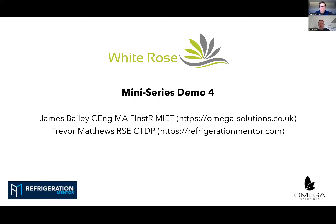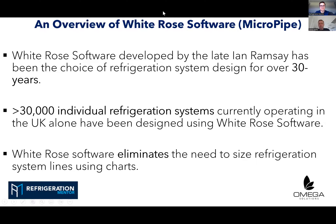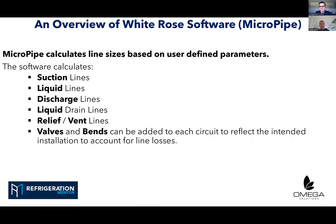Welcome everybody to mini-series demo four. A little history lesson: White Road software was developed by my good friend, the late great Ian Ramsey, my number one mentor. It's been used in the UK and beyond for over 30 years. In the UK alone, over 30,000 individual systems are currently operating using the software — from humble condensing units all the way up to large supermarket racks, blast freezers, and large ammonia-glycol systems in distribution centers. The key thing is it eliminates the need to size refrigeration services using charts, which takes away human error and saves time.